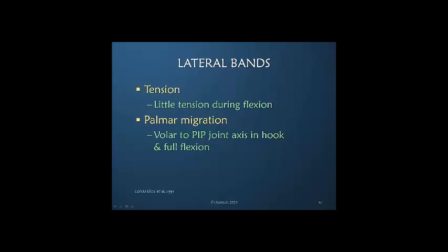This is confusing because in a boutonniere injury, palmar migration is pathological — those lateral bands move below the axis and stay there, as the dorsal connection has been torn apart. In the normal finger, there is dorsal connection, meaning the lateral bands do move volarly but are able to return dorsally during finger extension. It is only at maximum PIP joint flexion — in hook and full flexion — that the lateral bands are at their most volar position normally.